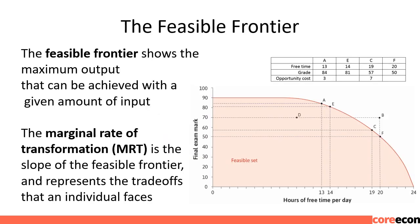The feasible frontier shows the maximum output — grade — that can be achieved with a given amount of input — study hours. Here, instead of hours of study on the horizontal axis, we plot free time, while the vertical axis still shows the final exam mark. This way, we have desired goods on both axes. The feasible frontier is the same as the production function, just flipped on the horizontal axis — its mirror image. It shows the highest final grade achievable given the amount of free time taken. As you move along points on the frontier, more of one good means less of the other.